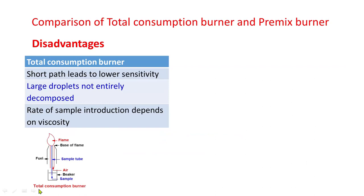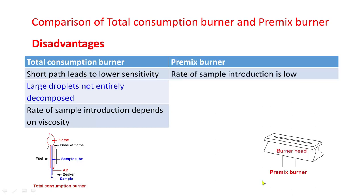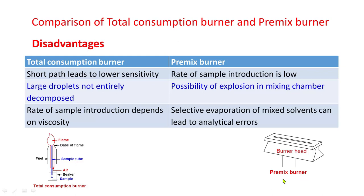Regarding disadvantages: the total consumption burner has a short path length and hence lower sensitivity. Large droplets are not entirely decomposed in the flame, and the rate of sample introduction depends on the viscosity of the solvent. For the premix burner, the rate of sample introduction is low, there is a possibility of explosion in the mixing chamber, and selective evaporation of mixed solvents can lead to analytical errors.